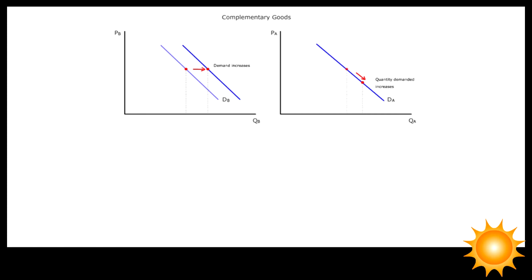Since goods A and B are complementary, more good A requires the use of more good B. But the price of good B has not changed, so more good B would be bought only if the demand for good B increases by shifting to the right.